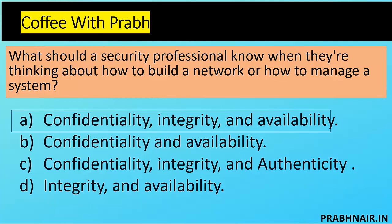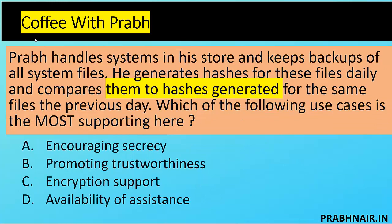Next scenario: Prob manages systems in his store and keeps backups of all system files. He generates hash values — fixed values of the data — for these files daily and compares them to the hashes generated for the same files the previous day. Which use case does this most support? Secrecy is not relevant here as it relates to confidentiality. Encryption support and availability are removed. The question is about comparing previous and new hashes.